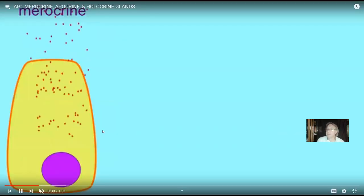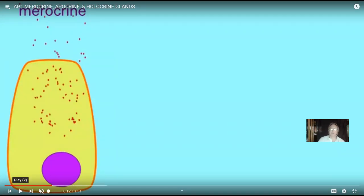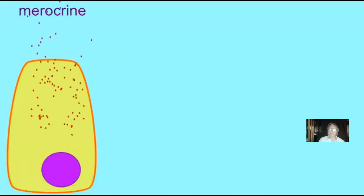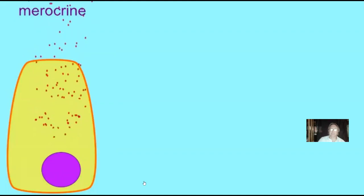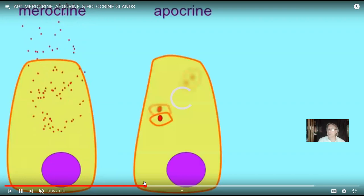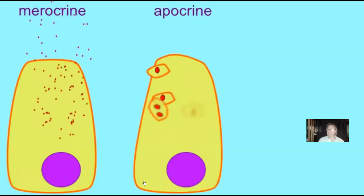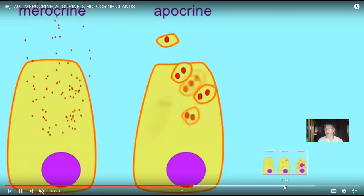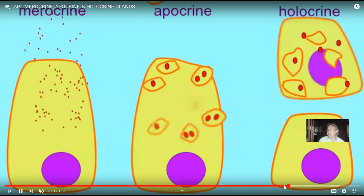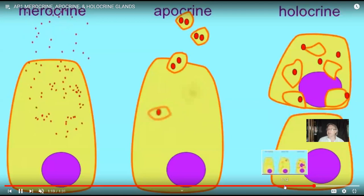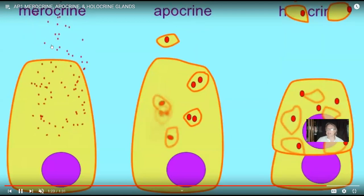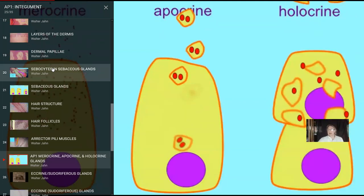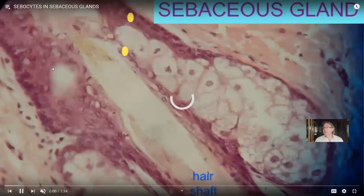There are different ways a cell can secrete a product. Cells can make vesicles and through exocytosis release them — this is known as merocrine secretion. Cells can also include parts of the cytoplasm — this is known as apocrine secretion. Or cells can actually die: they fill themselves with a product, the cells die, and the secretion includes dead cells. That's what's known as holocrine secretion. As we go through different types of glandular secretions, there are different ways cells can release products, and there are different glands in the skin.